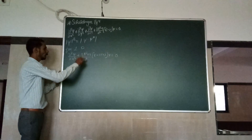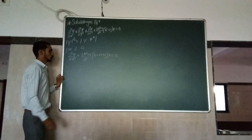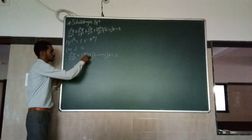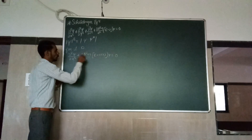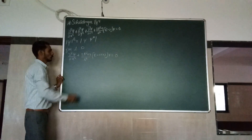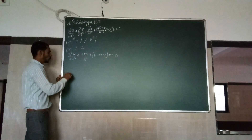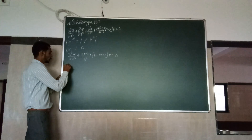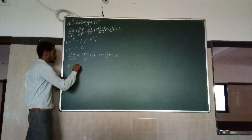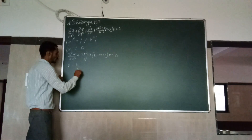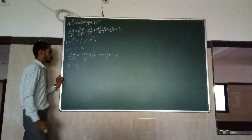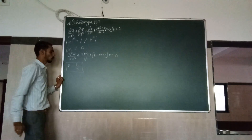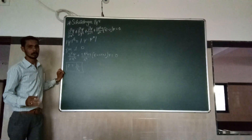Now we are going to evaluate these derivations to see what values we can get. According to the de Broglie equations, we know that the momentum p equals h over lambda.